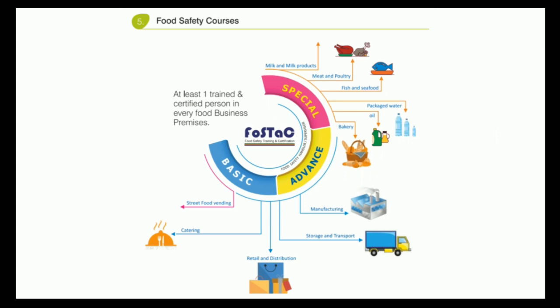The food safety course under FOSTAC has been divided into three different levels: basic, advanced, and special. Different food business operators can choose courses according to their food business. The basic FOSTAC training is important for street food vendors, caterers, and retailers. Advanced is important for manufacturers, and for those dealing with storage and transportation. Special FOSTAC training is important for highly perishable products like milk and milk products, meat and poultry, fish and seafood, packaged water, and oil and bakery. Every food business must have at least one trained and certified food safety supervisor who has undergone this FOSTAC training.